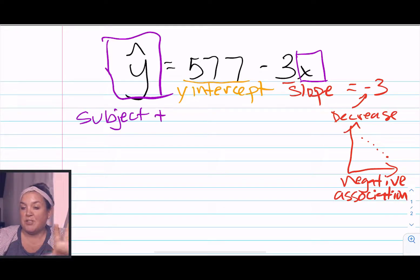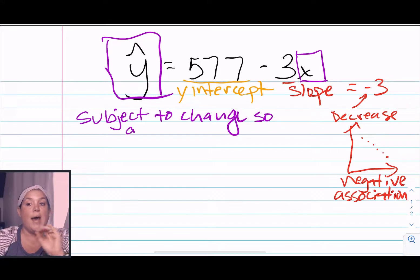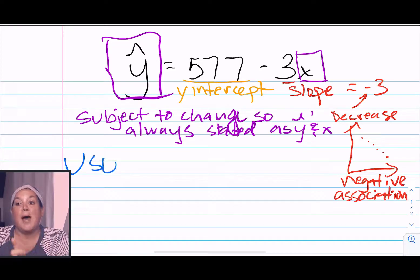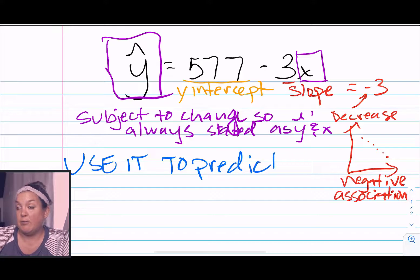One thing that's hard for students sometimes is they always want to put a number in for y hat and x, but when we write the regression equation, we use y hat and x, because when you use this equation, you're going to substitute x for some number, and y hat will then be calculated from it.